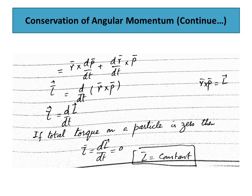When dL/dt equals zero, integrating automatically gives L as a constant value. This shows the conservation of angular momentum. I hope you understand.